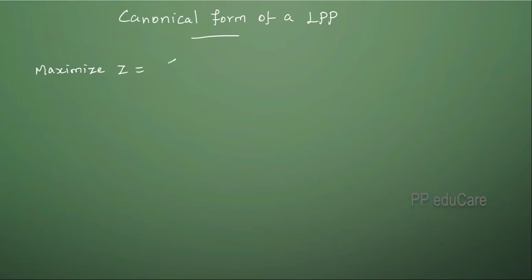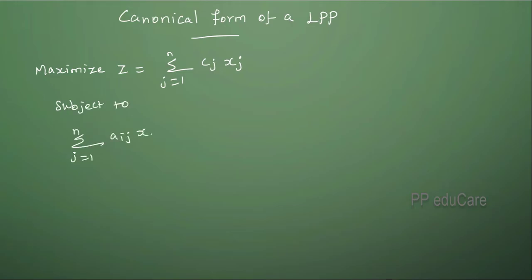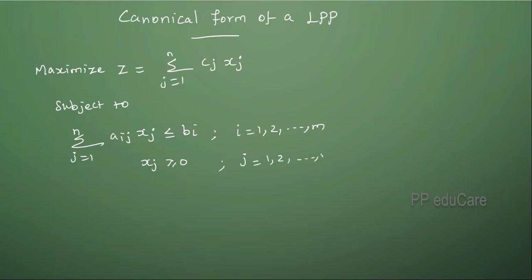The canonical form of a linear programming problem (LPP) is: maximize Z equal to summation (j from 1 to n) of cj xj, subject to the constraints summation (j from 1 to n) of aij xj less than or equal to bi, and all xj greater than or equal to 0, where i varies from 1 to m and j varies from 1 to n. This is the canonical form of a linear programming problem.